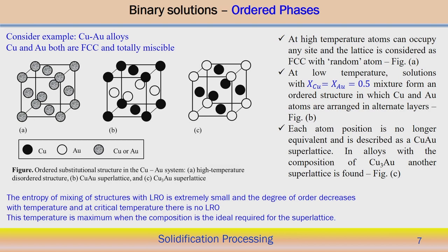At low temperature, when the composition is approximately X_Cu = X_Au ≈ 0.5, they can form an ordered structure in which copper and gold atoms are arranged in a particular alternating layer — creating an ordered structure possible at relatively low temperature. The second figure shows a copper–gold super lattice due to the particular layer arrangement it follows. The third case — each atom position is no longer equivalent — is described as a copper–gold super lattice. Apart from CuAu, the alloy with composition Cu3Au may also form, which is called another super lattice, corresponding to figure C.